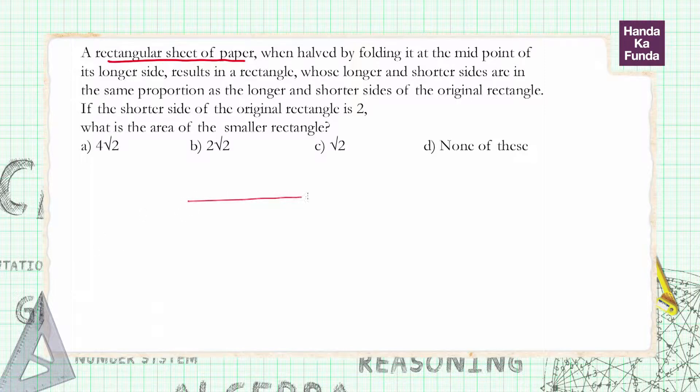So essentially what it is saying is that, let's say if this is my rectangular sheet of paper, then if I divide it in the middle, what happens? It maintains the same ratio. If the side of the original rectangle is 2...